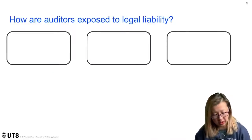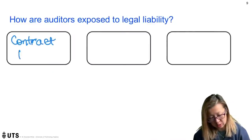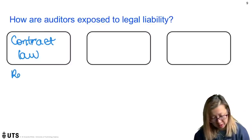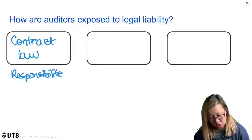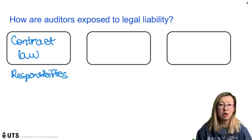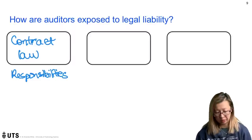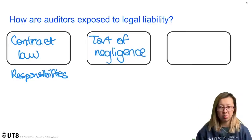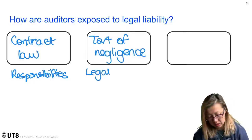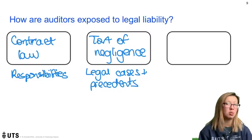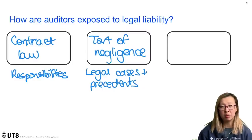There are three ways in which auditors are exposed to legal liability. The first is contract law — when you have a client you sign a contract, and the terms of that contract set out everybody's responsibilities: who does what, when they pay, everything. So contract law is the first area where we could be exposed to liability if we don't do what we're set out to do. The second area is the tort of negligence — a tort is not based on government regulation, it's based on legal cases and precedents, where judges make decisions about court cases and those judgments form the rules by which everybody else needs to follow.